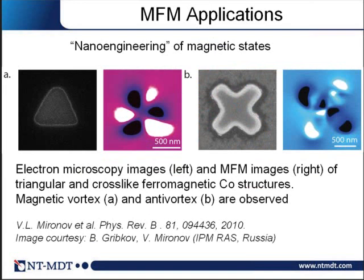It is now a very hot topic to create well-defined magnetic states called nanoengineered states, using lithography techniques to produce magnetic elements with well-defined magnetic states. MFM images can help detect and control these states. Here you see an electron microscopy image of ferromagnetic cobalt structures — a triangle and a cross-like structure — and on the right, their MFM images. By analyzing these images you can identify vortex or anti-vortex structures, which were created by design and the MFM images confirm they were successfully produced.